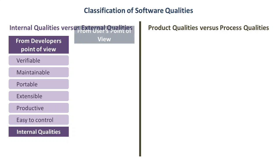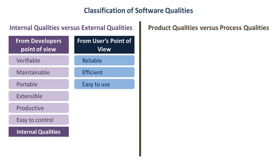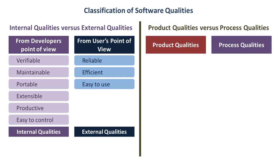The product and process qualities are closely intertwined, because process quality will automatically lead to product quality.